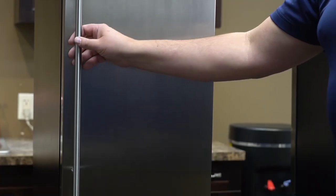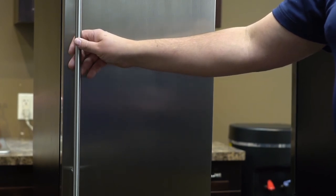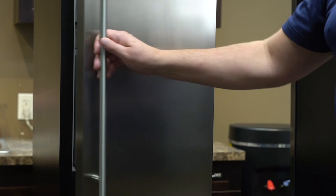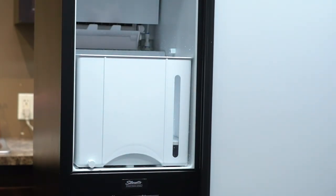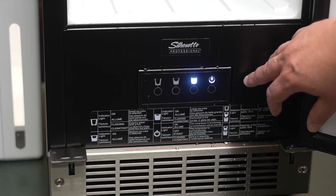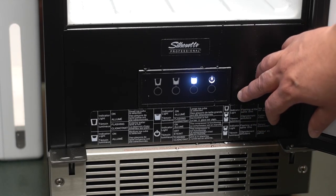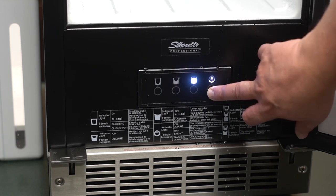Now we're going to talk about cleaning the ice maker. The frequency with which the ice maker needs to be cleaned is really a facet of how frequently you use the ice maker and how hard the water is in your area. To drain the unit when you're not using it or for the purpose of cleaning, you press the power button for three seconds to put the unit in standby mode.